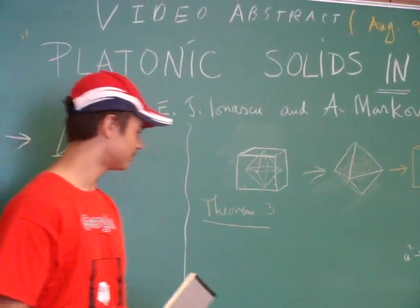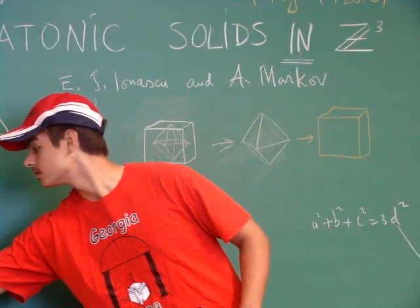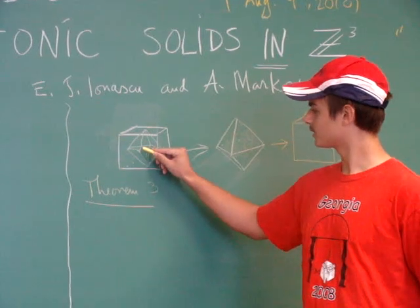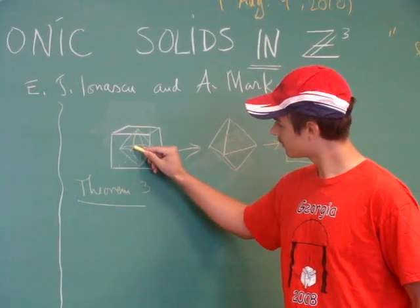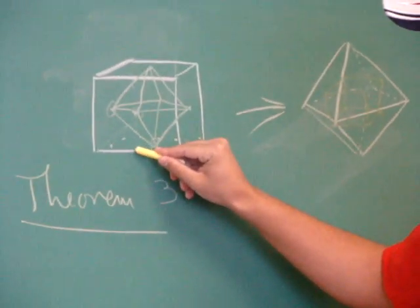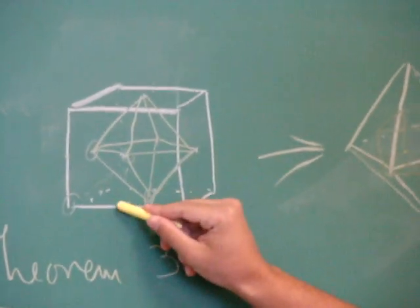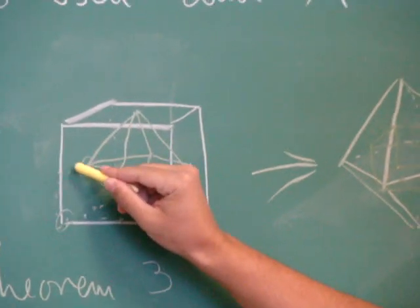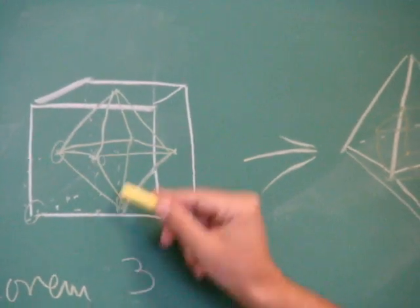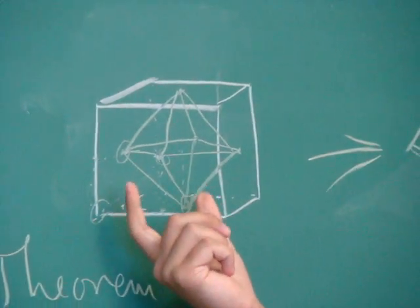Because if you take this octahedron, and you take these three vertices, and the midpoints of three sides on the cube, and this vertex, you will get a cube. Sorry, you have to take the center of the octahedron too, but you will get a cube which has all integer coordinates.